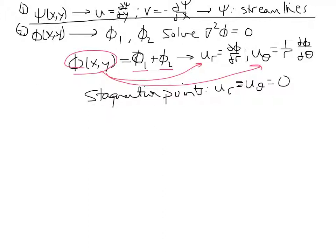That means once you've defined the velocities throughout r theta space, you can apply them in this equation, or this pair of equations really, to define where the stagnation points are.